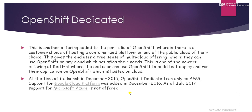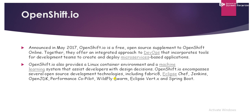Now we'll discuss the OpenShift Dedicated model. This is another offering added to the OpenShift portfolio, wherein there is a customer choice of hosting a containerized platform on any public cloud of their choice. In this model, OpenShift provides flexibility so the customer can run their containerized applications on any public cloud platform like Google Cloud or AWS. As of July 2017, Microsoft support was not yet available, but it is now supported.